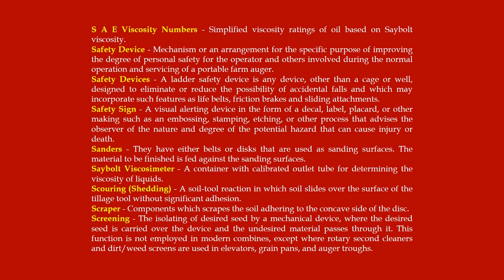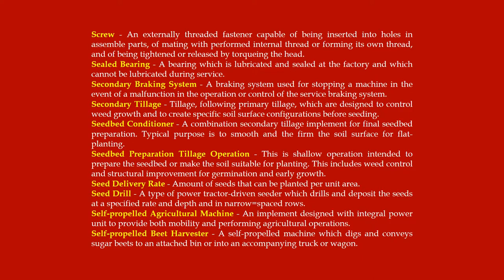Screening: the isolating of desired seed by a mechanical device where the desired seed is carried over the device and the undesired material passes through it. This function is not employed in modern combines except where rotary secondary cleaners and dirt/weed screens are used in elevators, grain pans, and auger troughs.